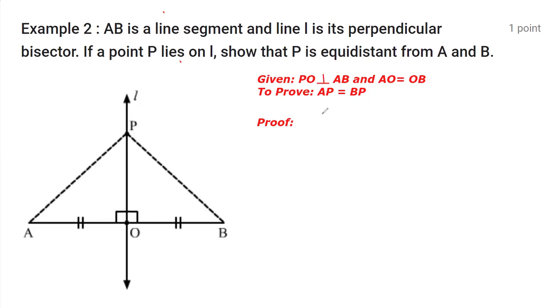We'll be considering these two triangles. The triangles we're considering are triangle APO and triangle BPO. In these two triangles, we can say that AO is equal to OB, and this is given.